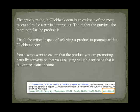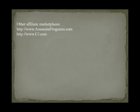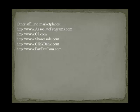There are other affiliate marketplaces that can help you both in selecting a niche topic and in locating additional products to promote. Some of these marketplaces include AssociatePrograms.com, CJ.com, ShareSale.com, ClickBank.com, and Pay.com. Just be sure to take notes of the products that you intend to promote so that you can refer to your swipe file later when we begin to add in affiliate products once our blog has been developed.